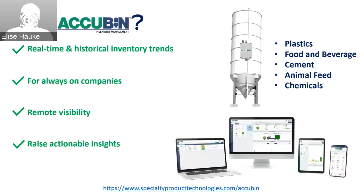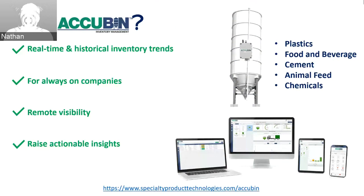Another question we had: what type of sensors can be used with Acubin? Acubin can be used with any of our continuous level Vindicator products that output a 4 to 20 milliamp signal, as well as any of our Kistler Morse weighing equipment. And if a customer already has sensors in place with a 4 to 20 milliamp output, Acubin can read and take in those sensors and show their data as well.